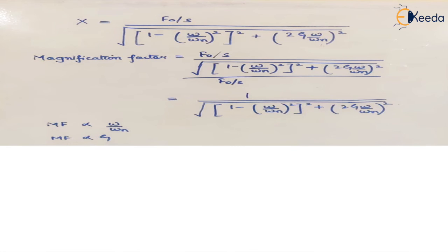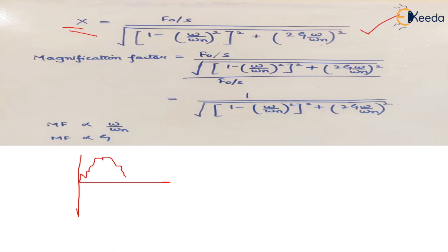This gives us the magnitude of the steady-state amplitude and introduces a new term: the magnification factor. It is the ratio of the steady-state response amplitude to the static deflection. Initially vibrations include both free and forced components — this is the transient phase. Once the free vibration effect dies out, only forced vibration remains and we call this the steady state.